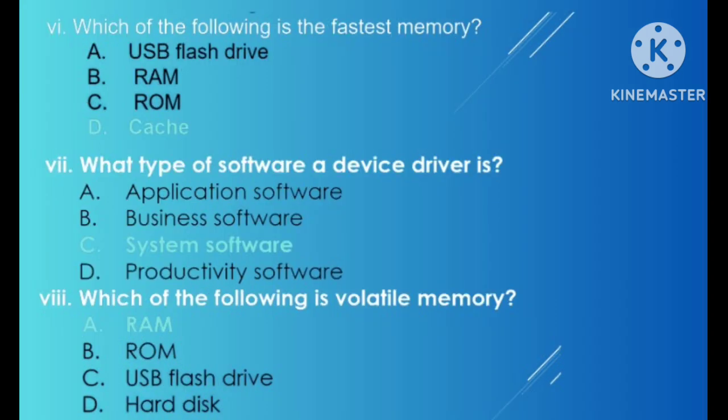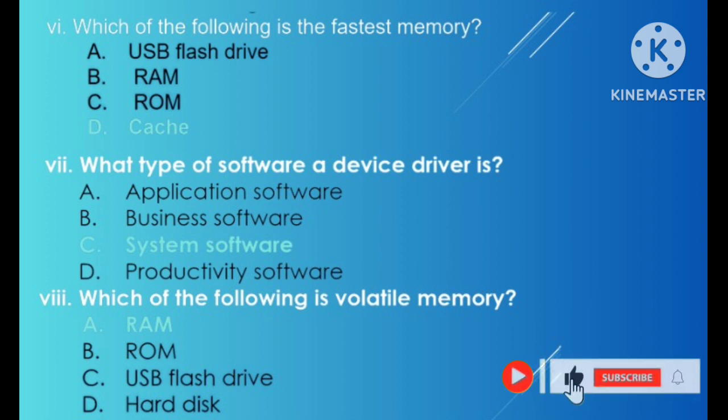MCQ six: which of the following is the fastest memory? Cache is the fastest memory. MCQ seven: what type of software is a device driver? A device driver is a system software.